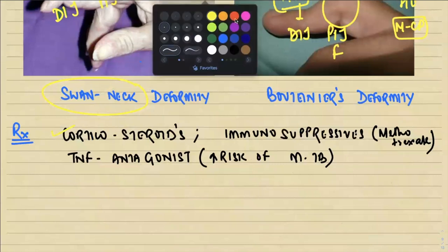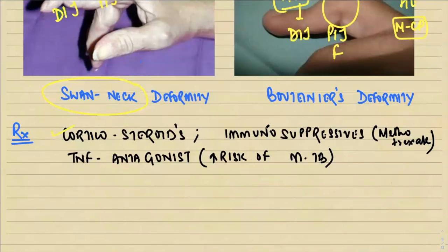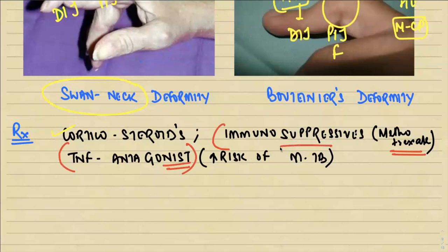Regarding treatment: as RA is an autoimmune disorder, corticosteroids form the mainstay of treatment along with immunosuppressives like methotrexate. Because TNF is the most important cytokine in RA pathogenesis, TNF antagonists are classically used, but their use carries an increased risk of opportunistic infections, especially mycobacterial tuberculosis. With this we have completed our discussion of rheumatoid arthritis.